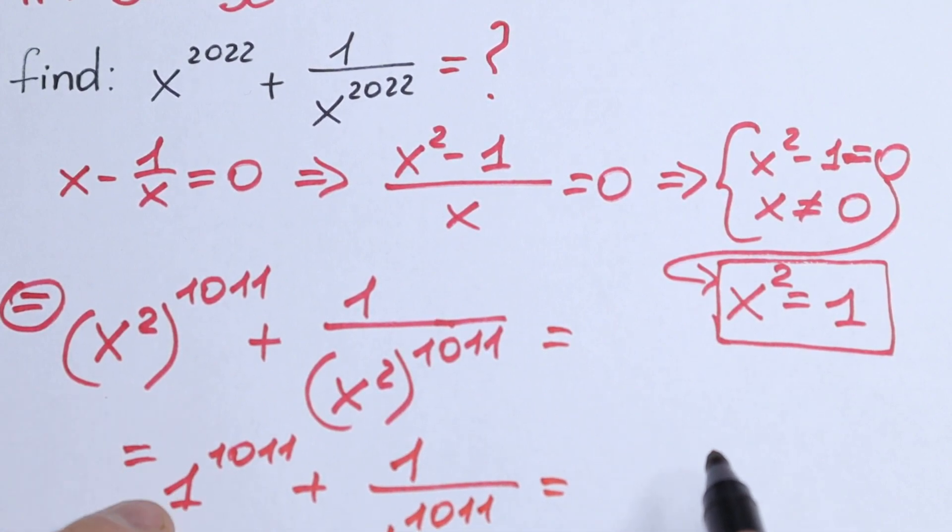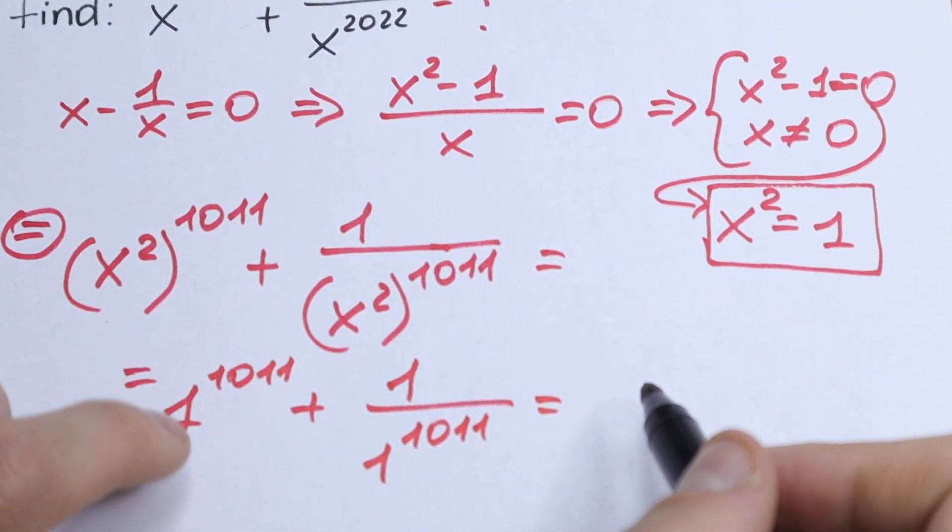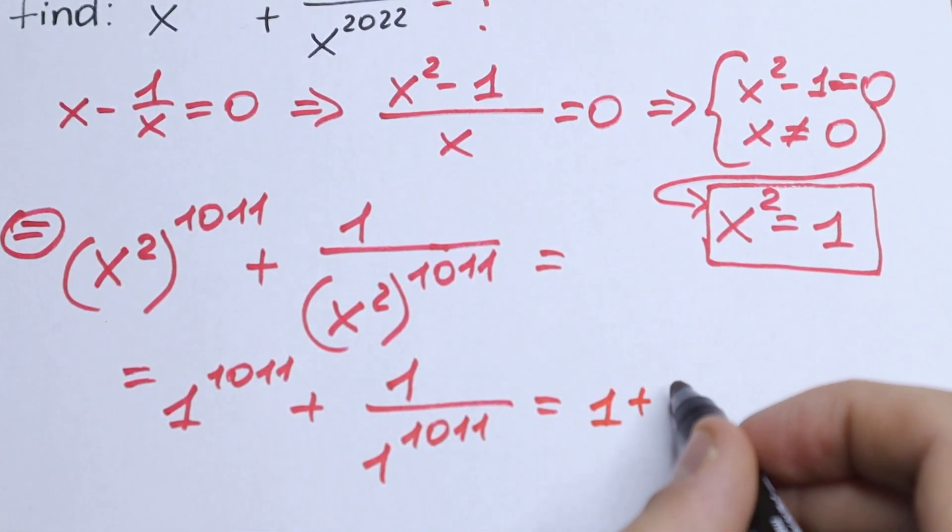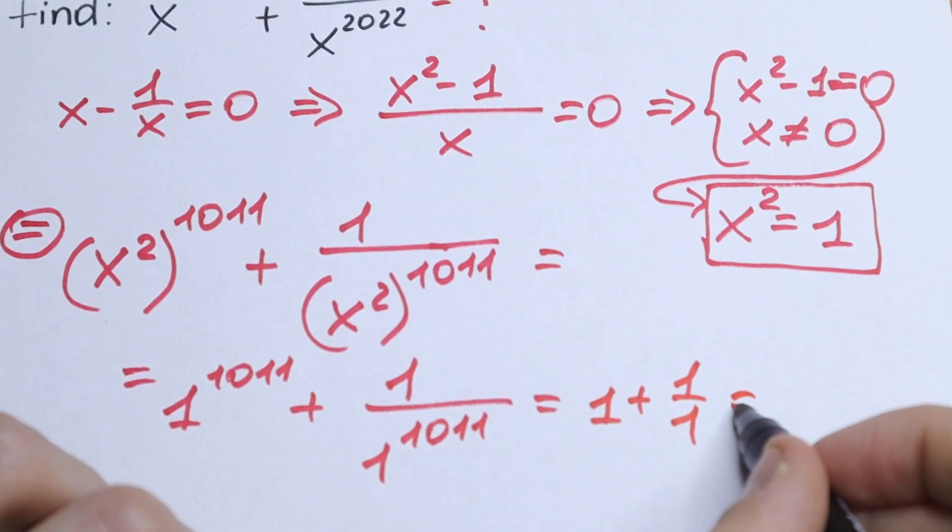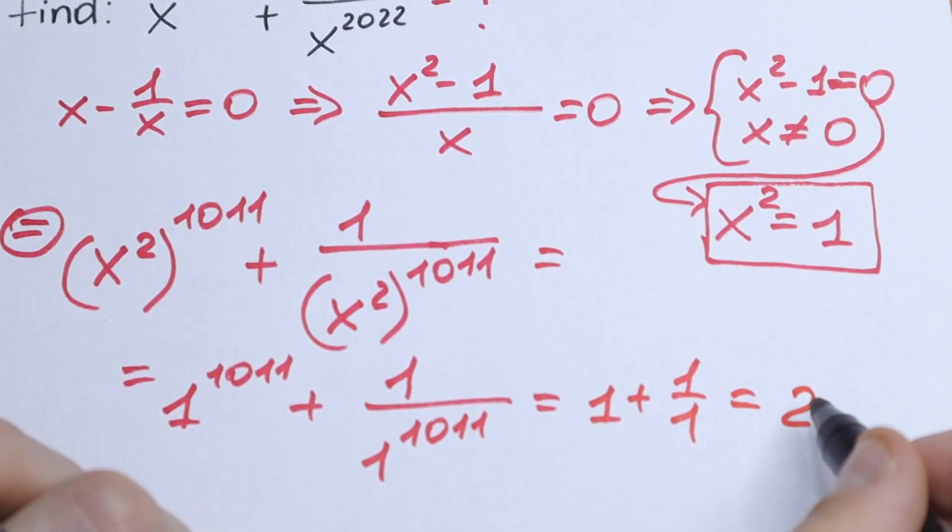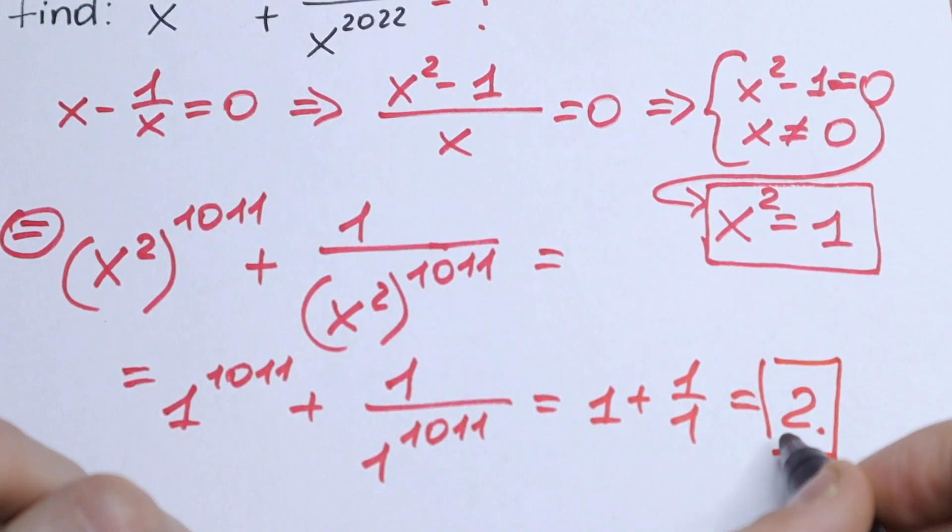Huge power. But if we raise 1 to this power, we will have just 1. And 1 plus 1 over 1, we will have 2. And 2 will be our answer.